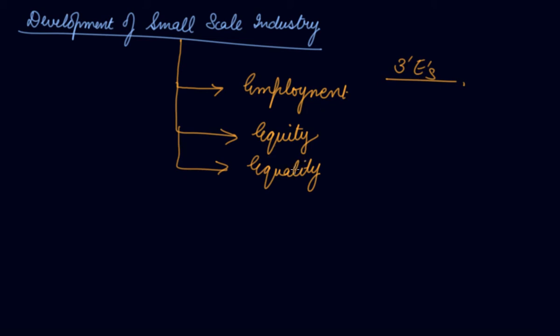Equality means that when you establish a small-scale industry, you are providing employment to people living in backward regions or people who do not have money. These small-scale industries give income to poor people, which helps in distributing income and creating regional equality. With this view, small-scale industries were set up.